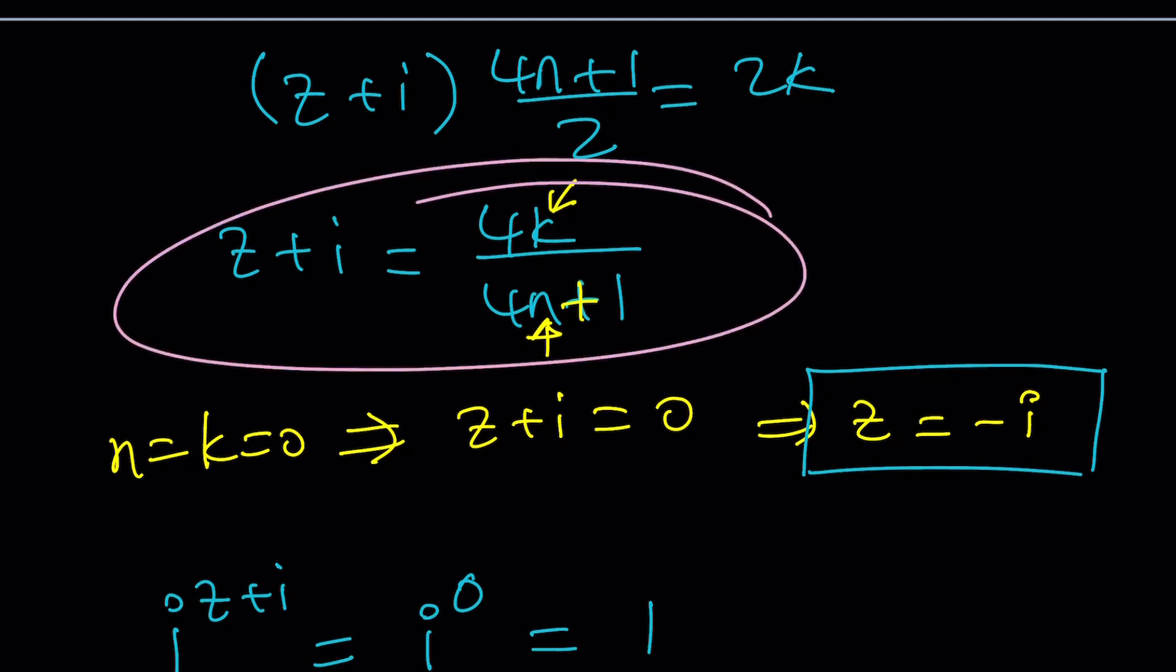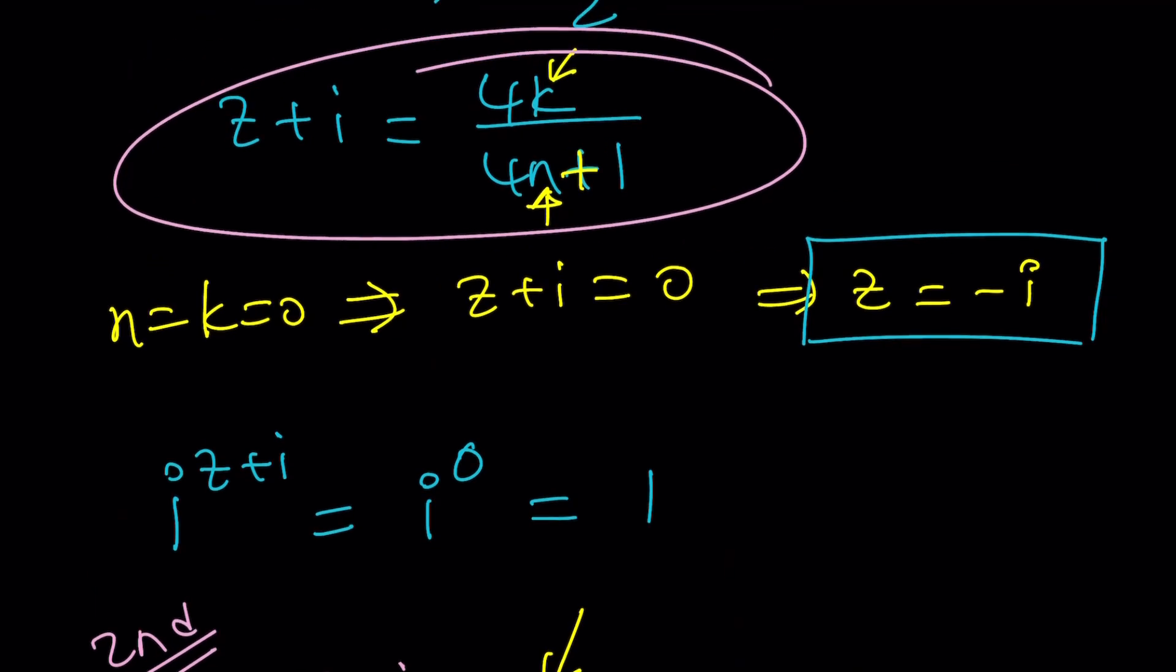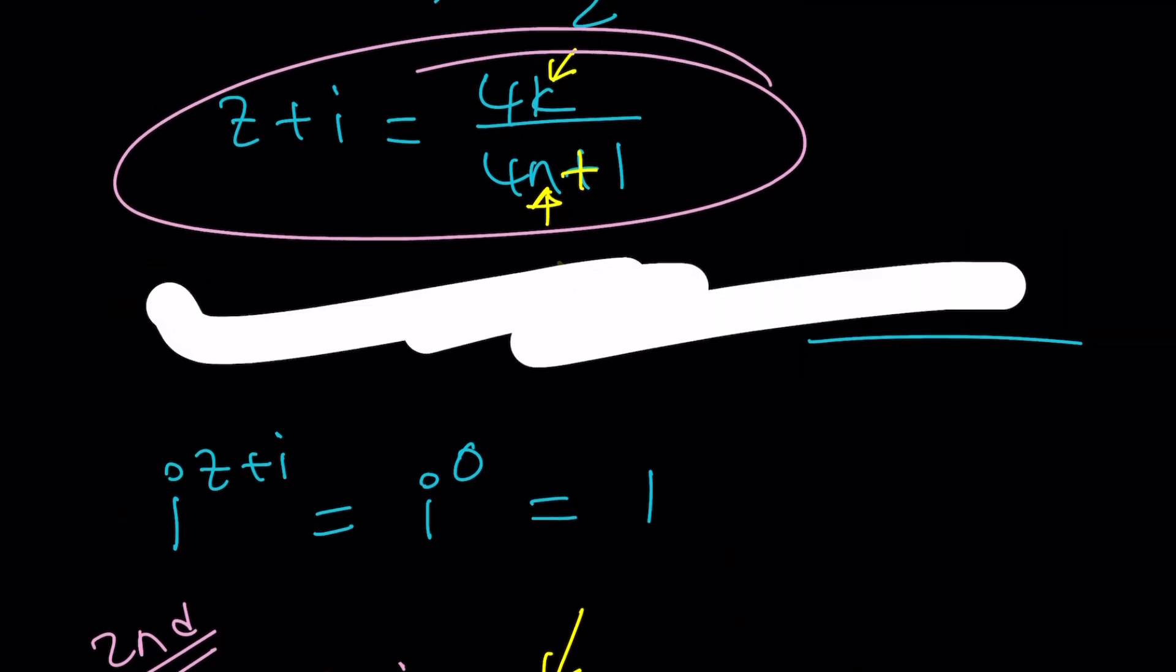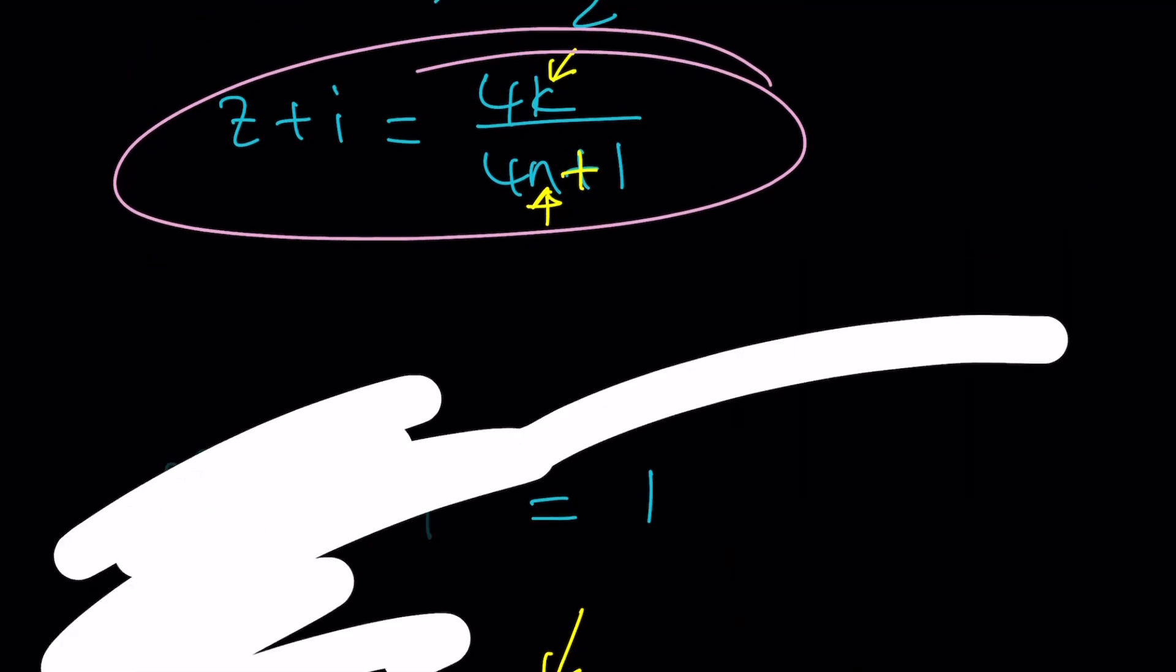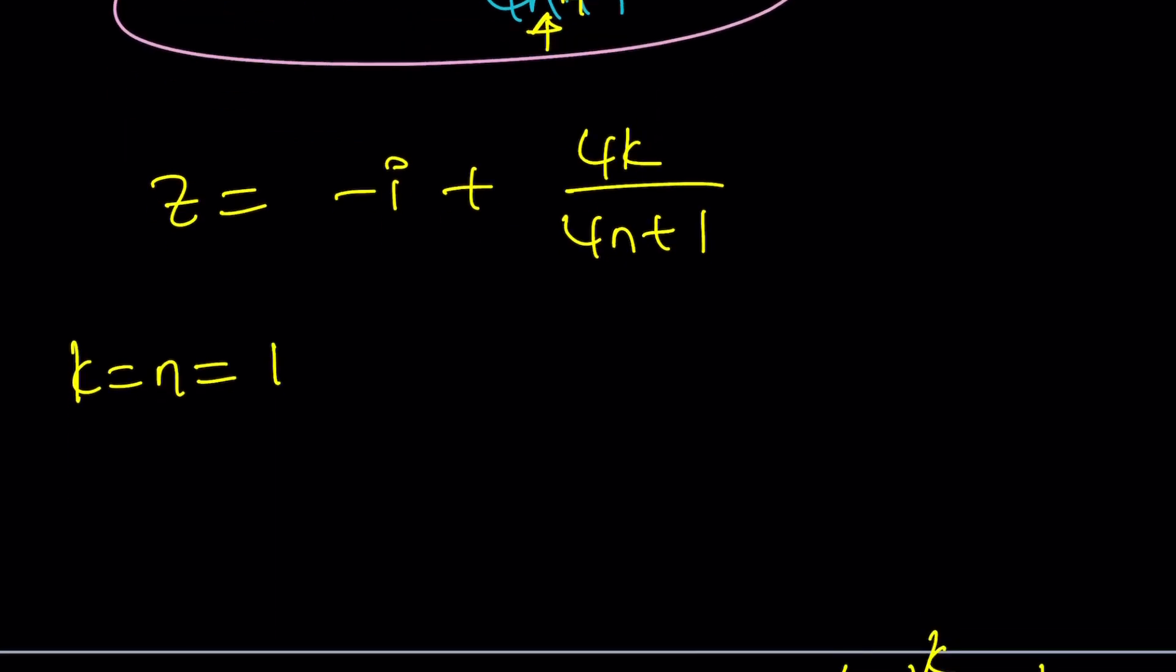This kind of gave us a solution but with my first approach I got something like this. That kind of looks messy. So here's what I'm going to do. I'm going to clean this area. I want to use this area because I'm lazy. I don't want to rewrite this again. I'm going to isolate this expression and write it as negative i plus 4k over 4n plus 1. Remember k and n are integers. Now what happens in this case? For example if k equals n equals one, they're both equal to one.